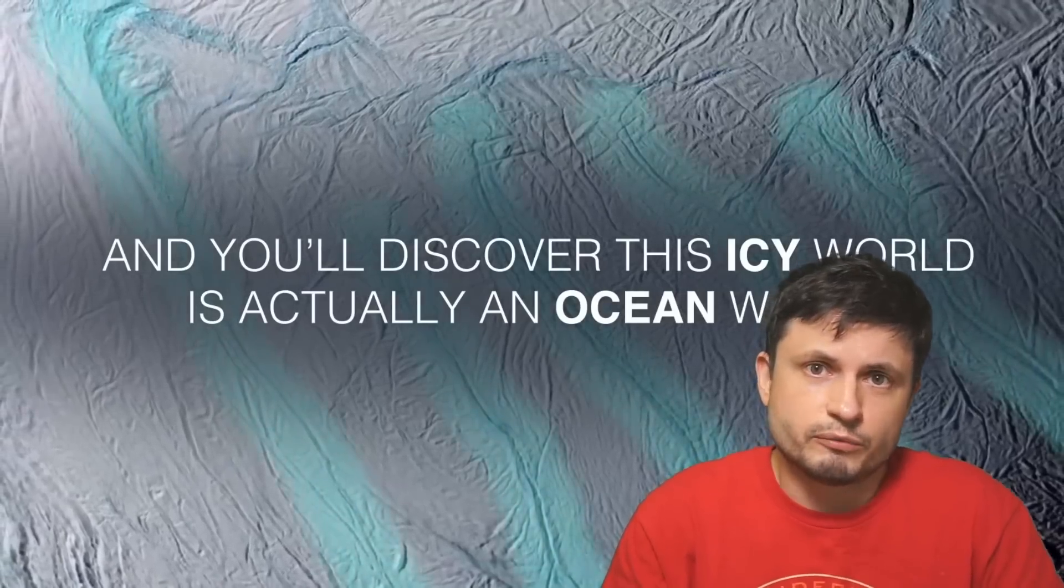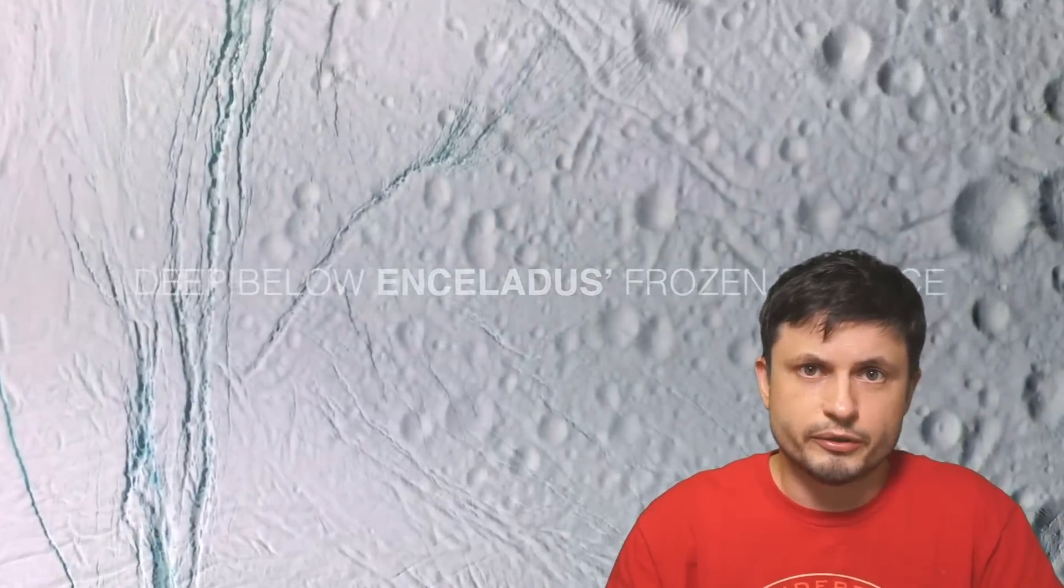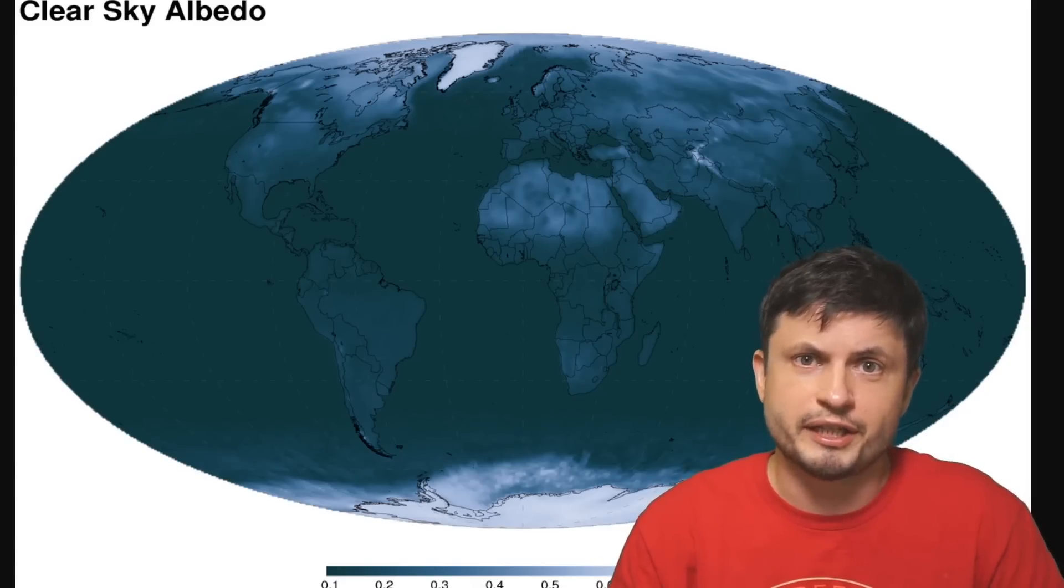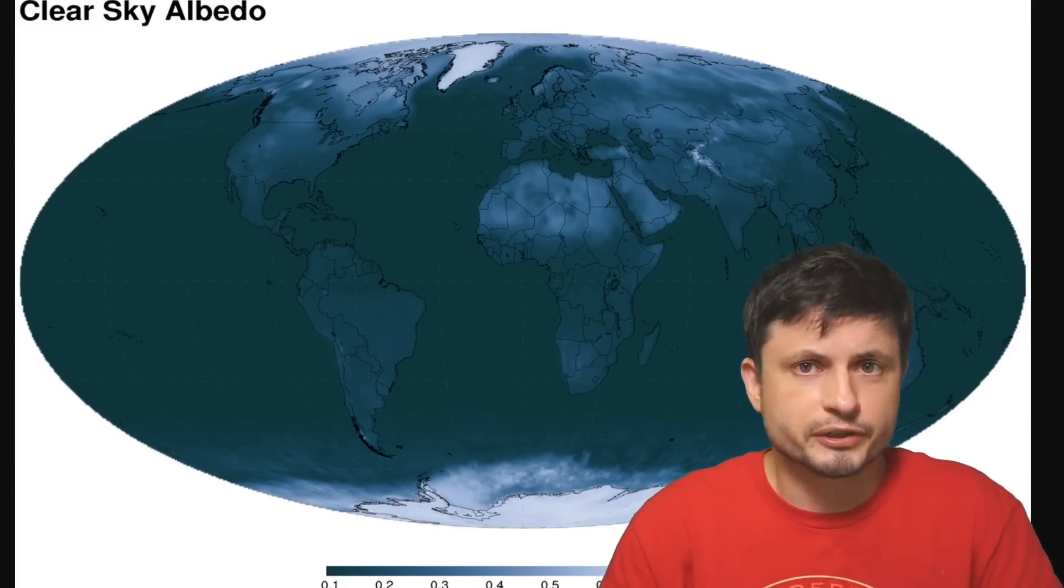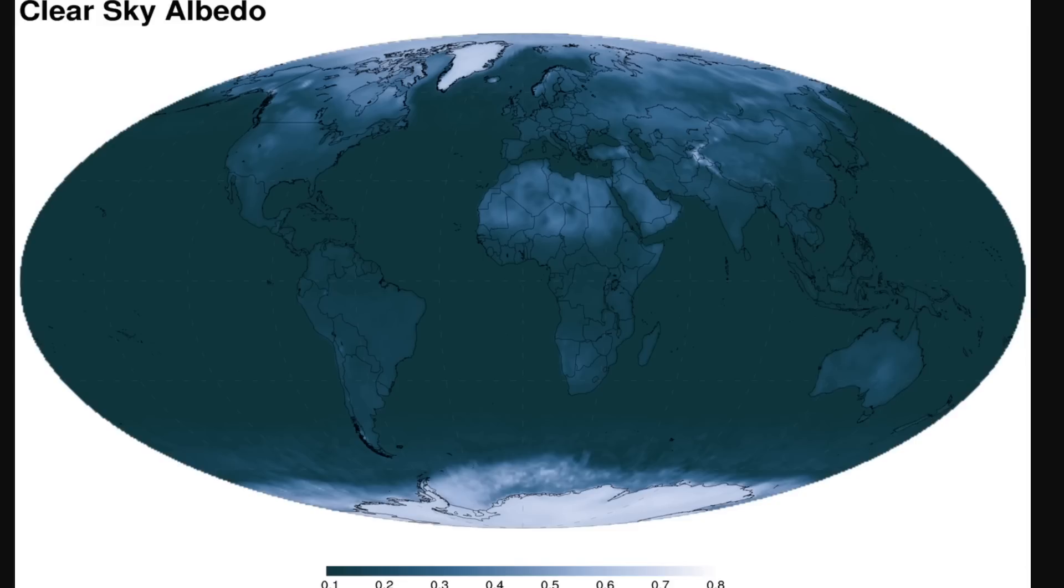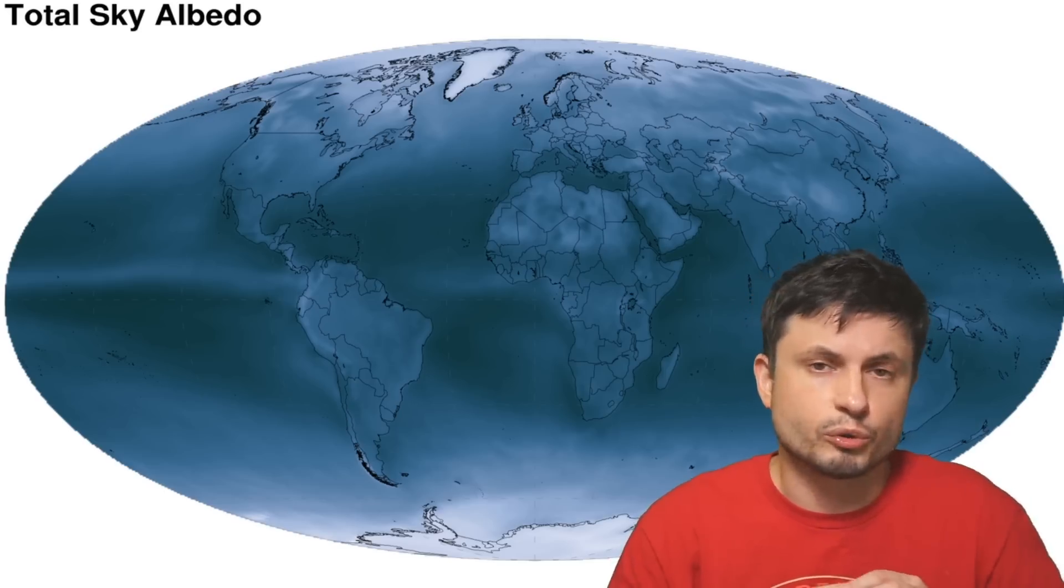But albedo itself is a really complex concept and it's also not constant. For planet Earth it changes quite a lot depending on the atmospheric conditions, weather effects and a lot of other conditions that are usually very difficult to predict. For example here are the calculations for the albedo during completely clear skies whereas here is what it looks like when you have a lot of clouds and different weather phenomena that could potentially increase the albedo quite a lot.